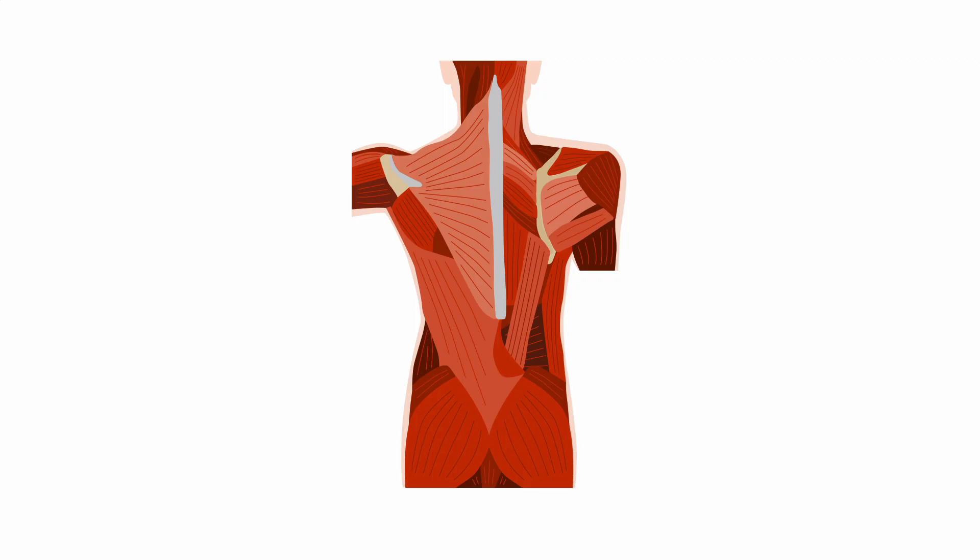The back is a complex machine consisting of an array of components that allow it to serve multiple functions and withstand various external demands and forces. Consider that at each spinal level, there is an intricate arrangement of numerous muscles and their attachments, ligaments, facet joints, vertebral bodies, and discs.